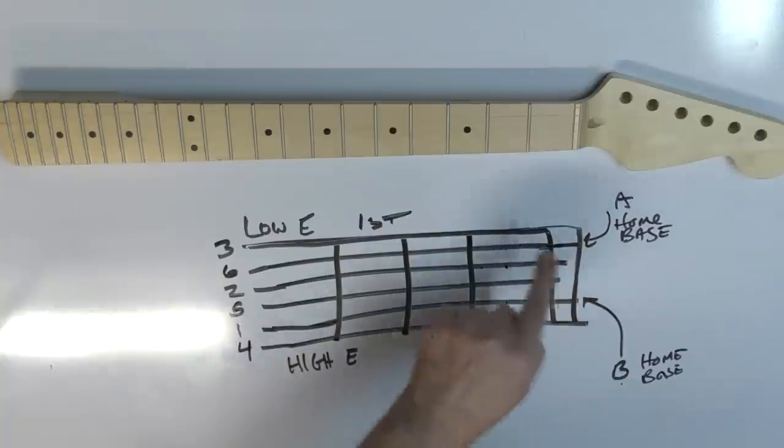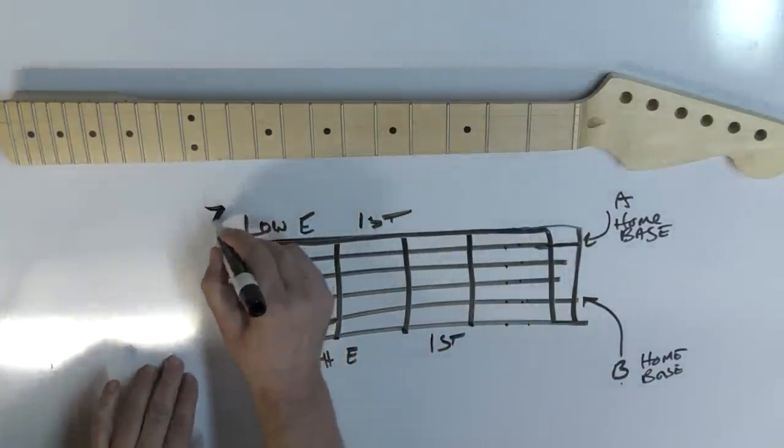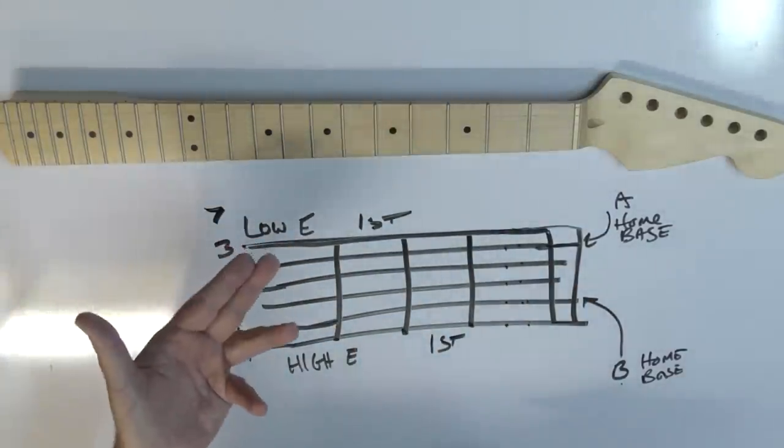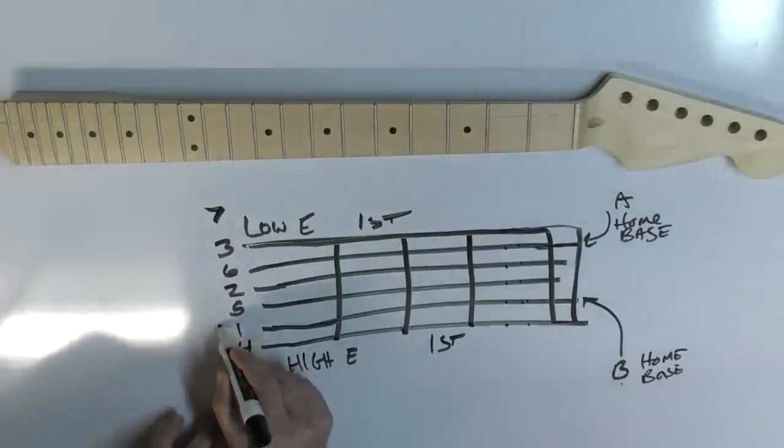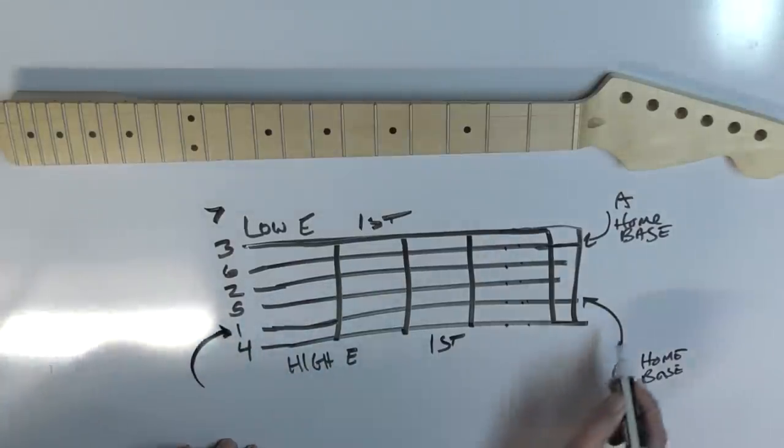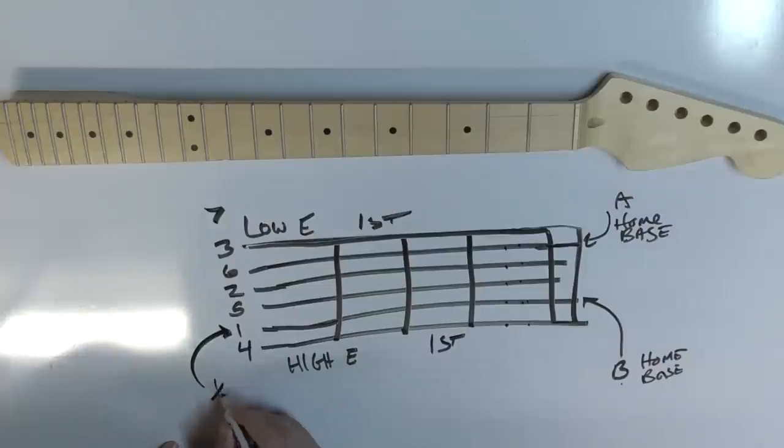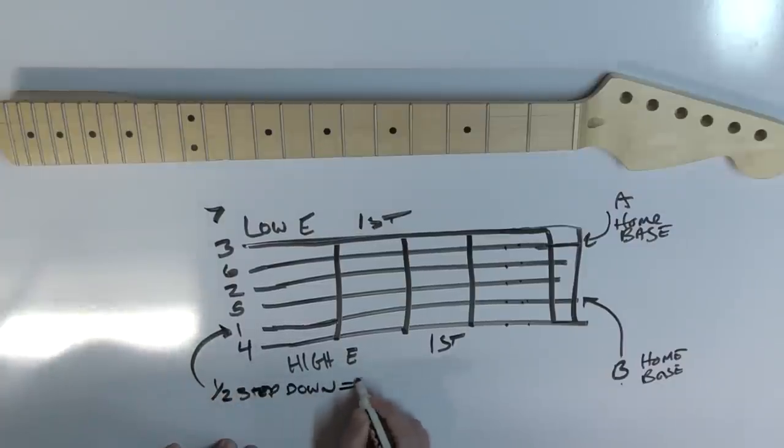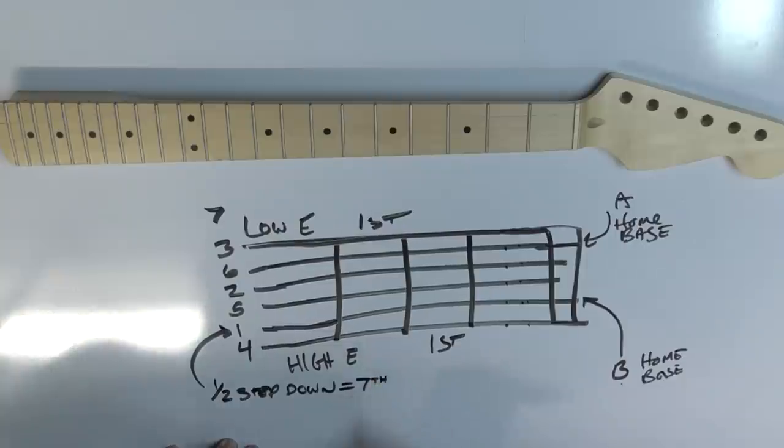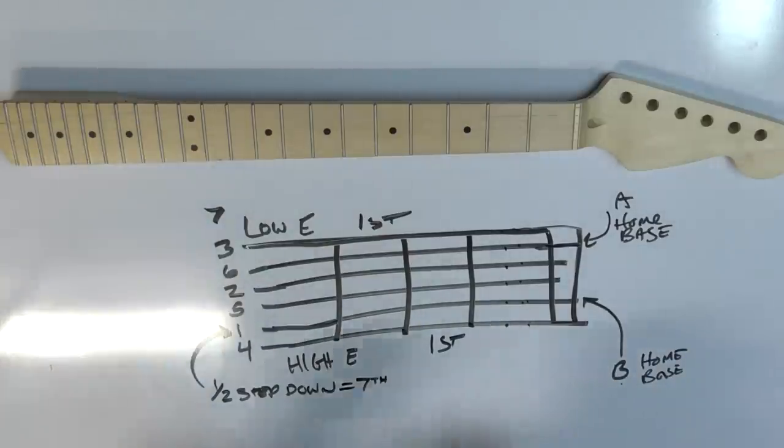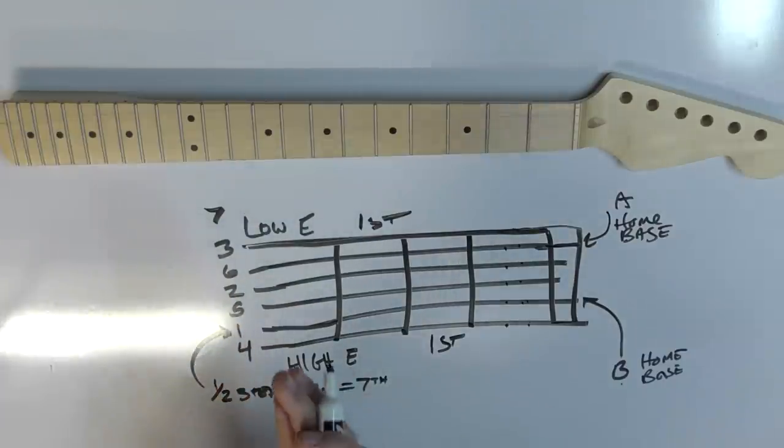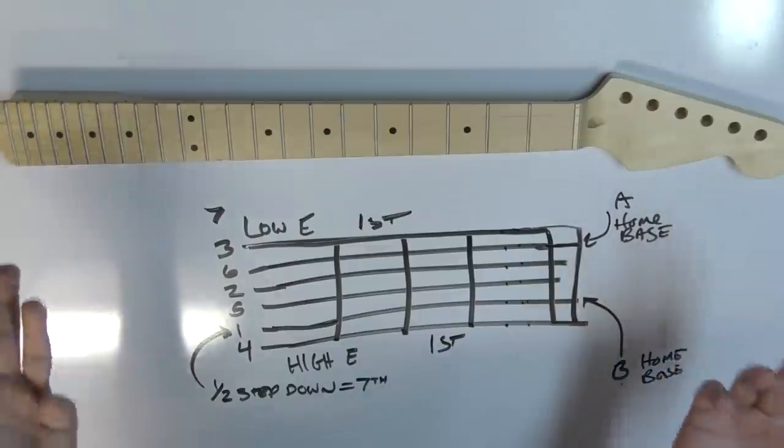Now, if we had a seven string, that would be our 7. If we do not have a seven string, which most people do not, this guy right here, our home base, is going to be a half step down. And then that would be our 7th. Now, why am I saying it like this? This actually represents the pattern of a scale.